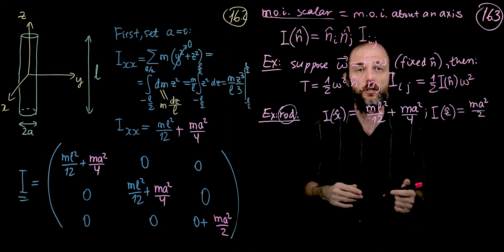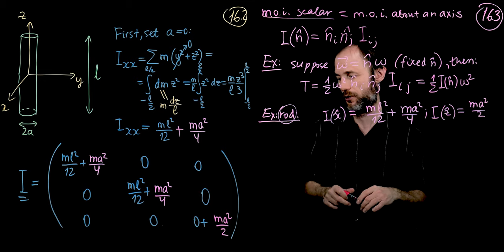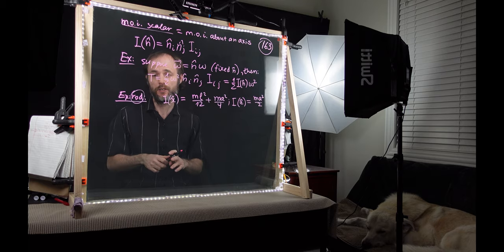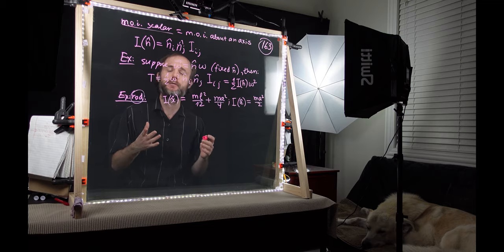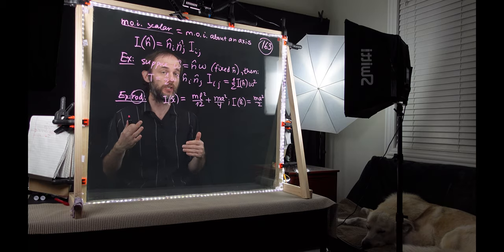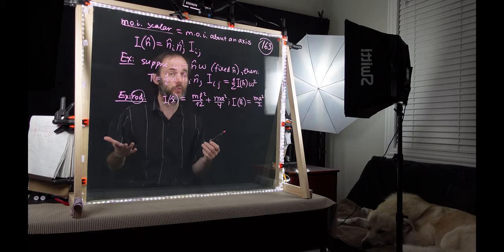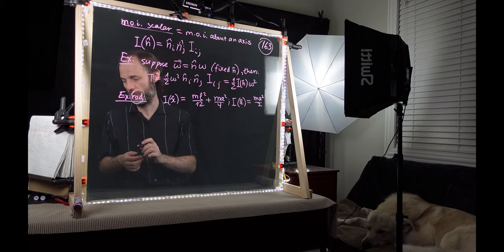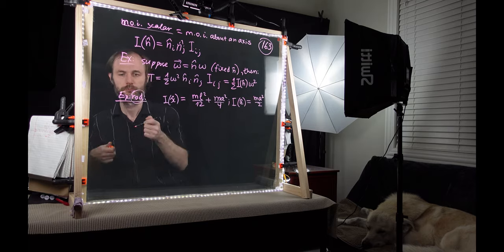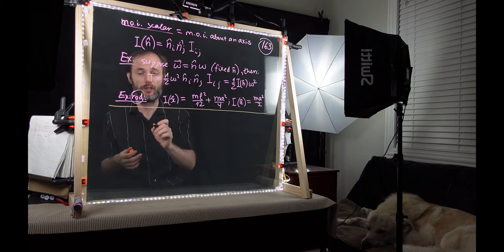We're just plucking out the relevant diagonal component from the moment of inertia tensor — no magic here. Let's now work with the moment of inertia scalar to get a better intuitive picture of how the moment of inertia changes as we change the axis about which we compute it. That is given to us by the parallel axis theorem.